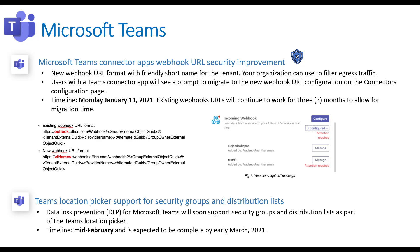Next one is for DLP policies. DLP is part of certain business plans like Business Premium that you might have. They've now included support for security groups and distribution lists for Teams DLP policies. Previously, you could pick Teams channels and individual users, but if you wanted to back up chats or apply DLP policies for particular users, it was pretty cumbersome to do one user at a time. Now they're allowing it via security groups or distribution lists, coming out mid-February and complete by March.